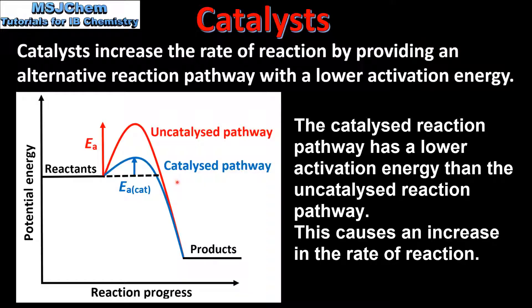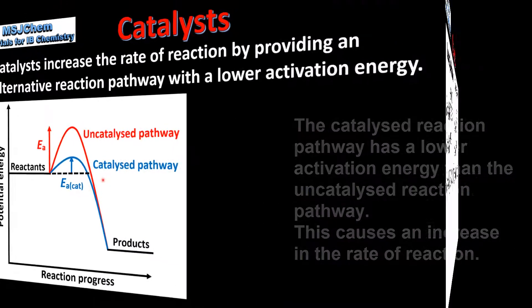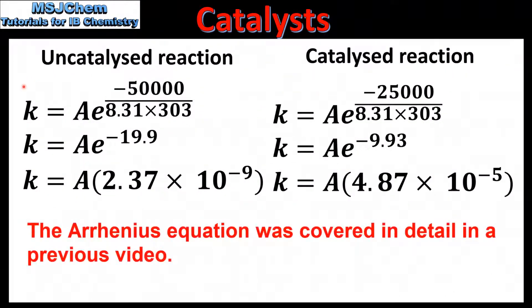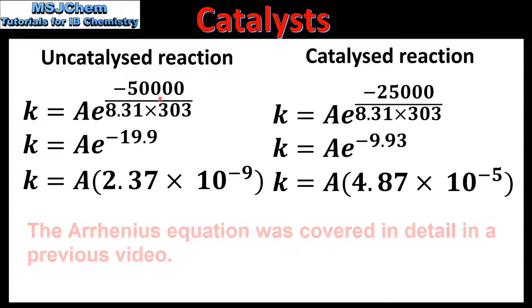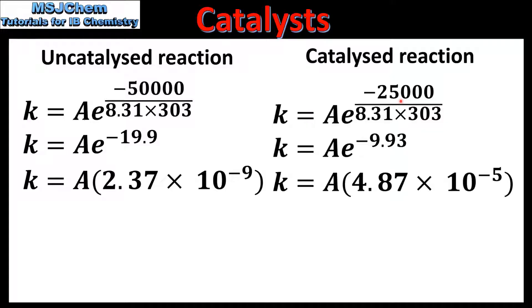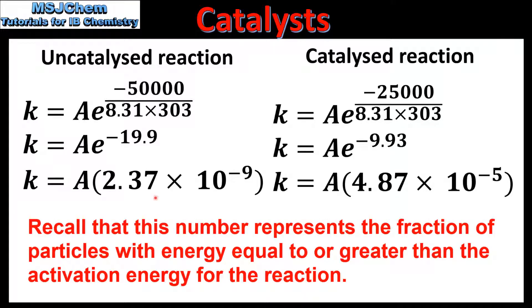Next we look at the effect of a catalyst on the value of the rate constant K. In this slide we can see the Arrhenius equation for an uncatalyzed reaction and a catalyzed reaction. For the uncatalyzed reaction we're assuming an activation energy of 50,000 joules per mole, and for the catalyzed reaction we're assuming an activation energy of 25,000 joules per mole. Note that the temperature for both reactions is the same, giving us 2.37 times 10 to the negative 9 for the uncatalyzed reaction and 4.87 times 10 to the negative 5 for the catalyzed reaction.